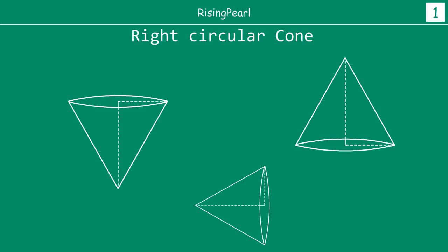Now from your earlier grades you know what is a right circular cone. Typically we draw a right circular cone in this fashion. We have a circular base and as we go away from the base to the top, the edges converge. This is an example of a right circular cone.